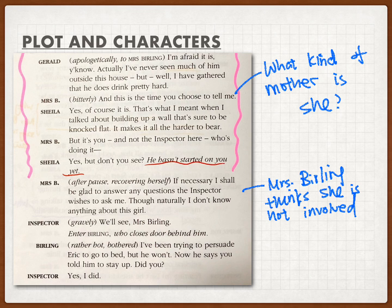Mrs. Birling still thought she wasn't involved in the case because she believed she didn't know much about Eva Smith. But of course the inspector knew exactly what Mrs. Birling had done — he just hadn't revealed it yet, as he was still focused on questioning Gerald, following his method of questioning one person at a time.